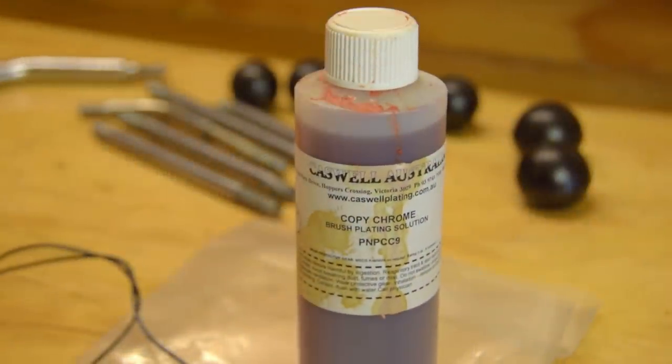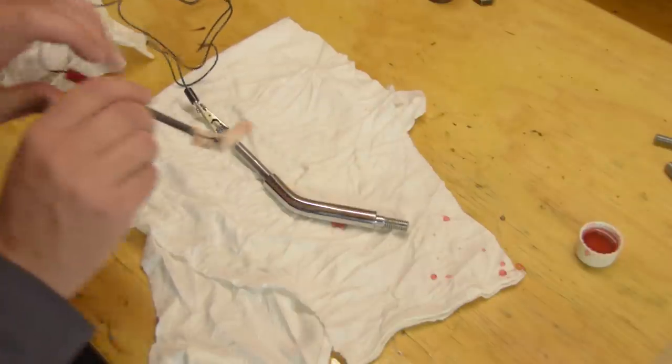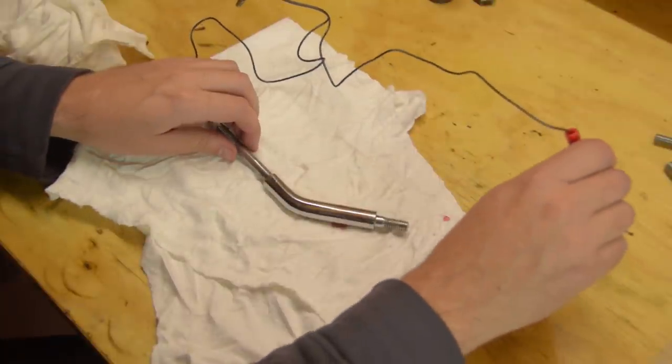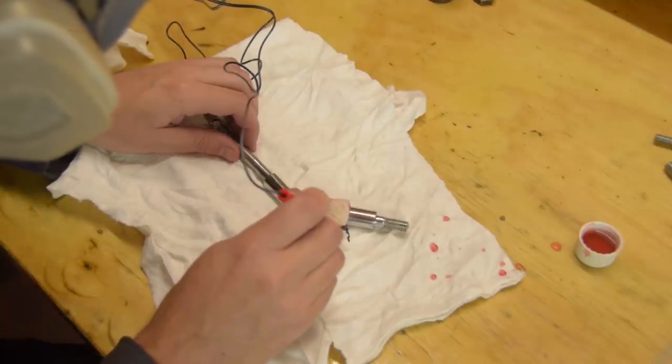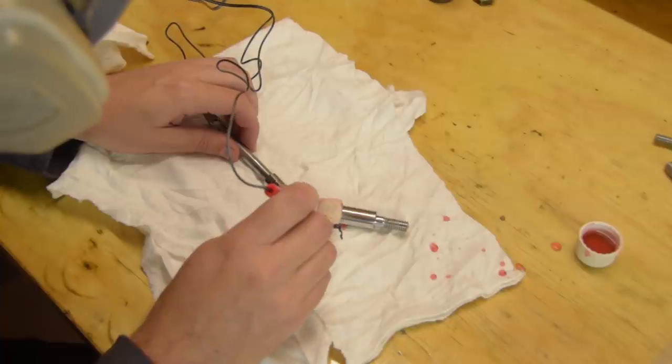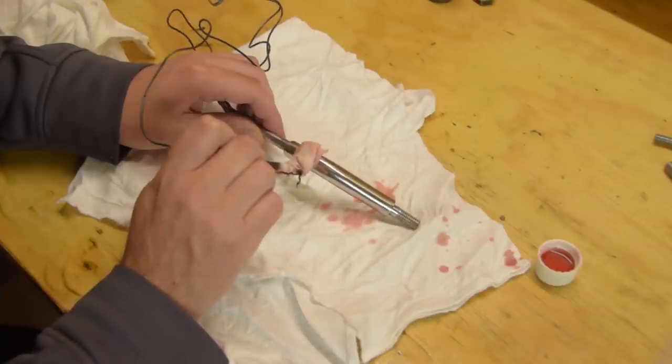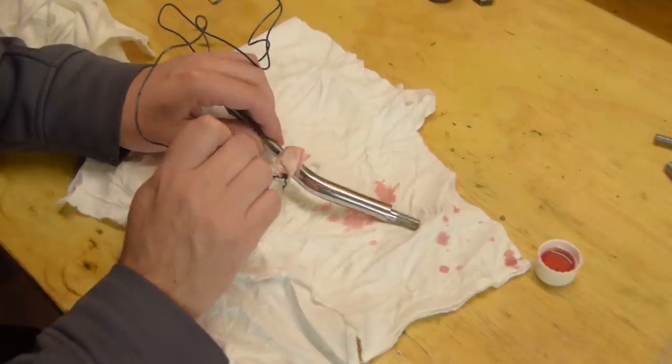This is Caswell's brush-on copy chrome solution. It's basically cobalt. The end result does look like chrome though. However, I don't like the brush-on part but this little kit only cost me about $40, whereas the smallest copy chrome immersion kit costs about $250 US dollars plus shipping.